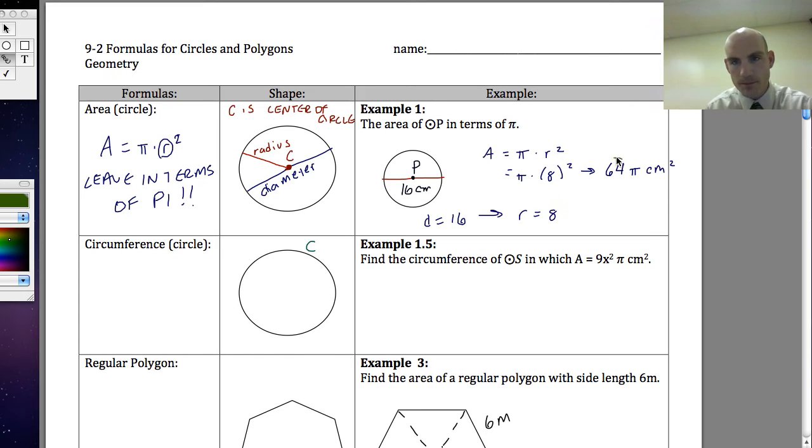This answer is in terms of pi. Notice, I did not multiply by 3.14 or 22 over 7 or 3.14159265. I just left it as pi. That's what it means to keep it in terms of pi. So 64 pi centimeters squared is the answer to this question.